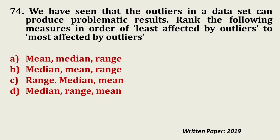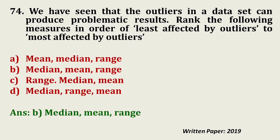Question number 74: We have seen that outliers in a dataset can produce problematic results. Rank the following measures in order of least affected to most affected by outliers — mean, median, range. This question is from environmental statistics. The answer is B: median, mean, range.